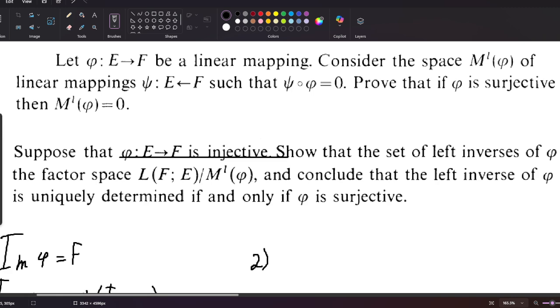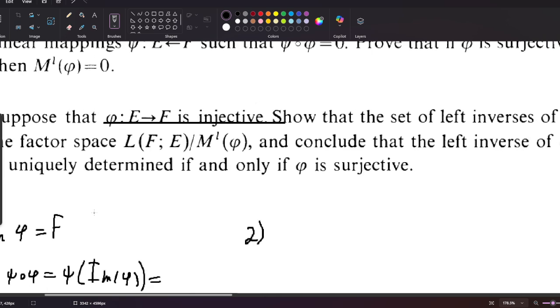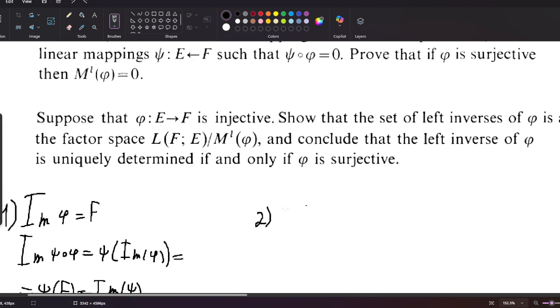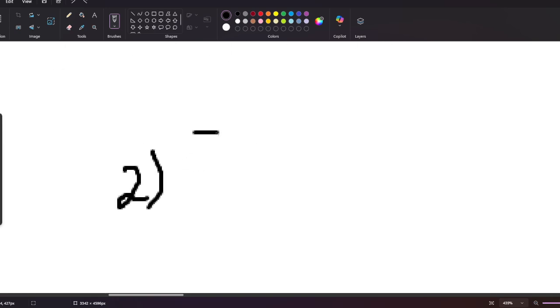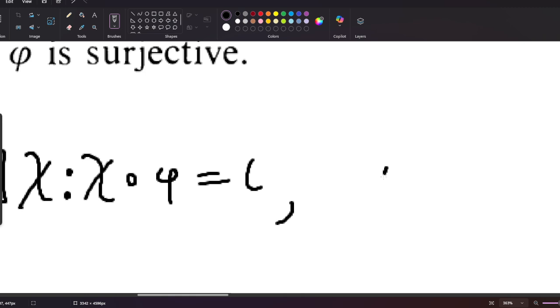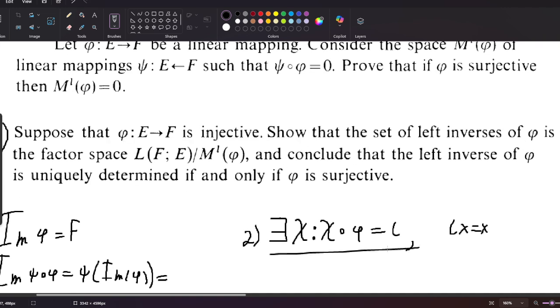Suppose that phi from E to F is injective. I have to show that the set of left inverses of phi is a coset in the vector space L(F,E) over M'(phi), and conclude that the left inverse of phi is uniquely determined if and only if phi is surjective. Let's begin by noting there exists q such that q composed with phi is the identity mapping, because phi is injective.